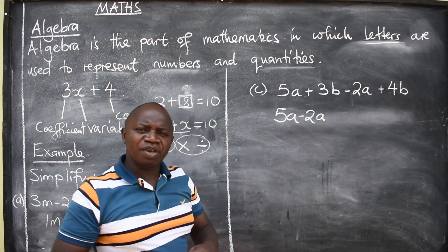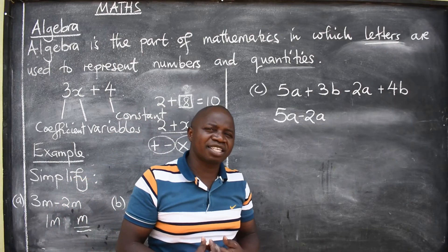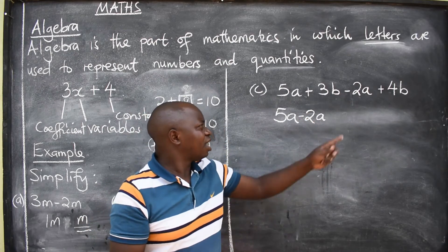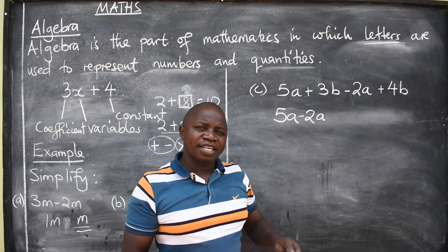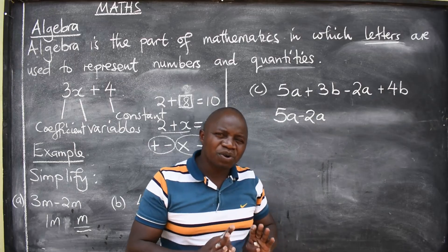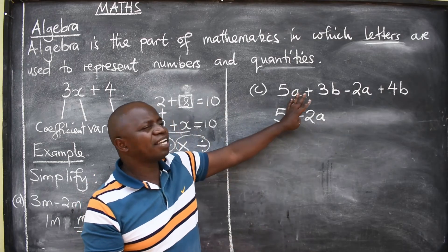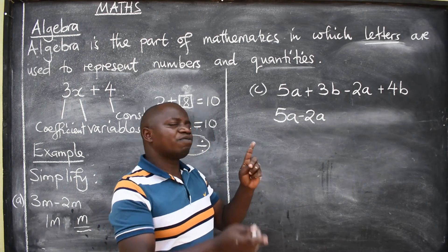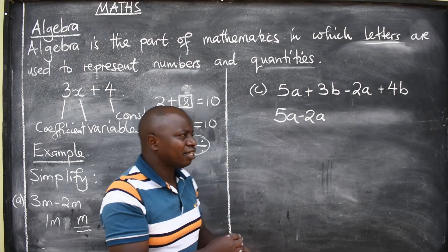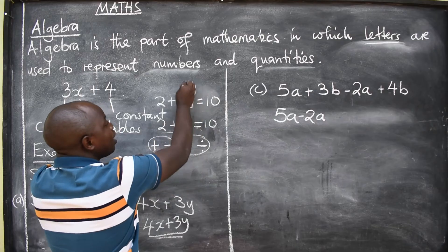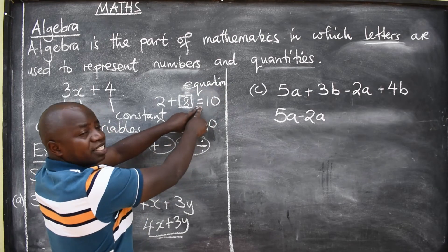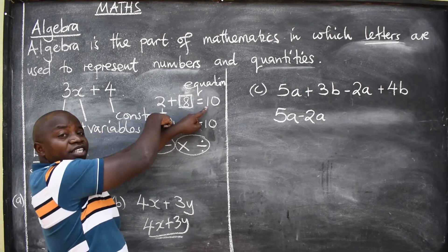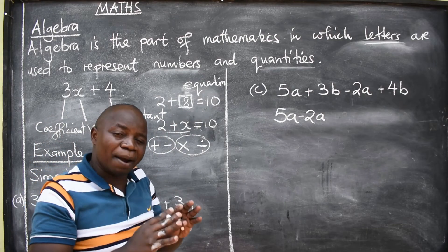There are those students with that concept of when you bring this here, it changes, the sign will be positive. Is this where we apply that concept? No. We don't apply that concept under algebraic expressions. Please, I'm begging you. Only apply that concept of swapping the signs when you are dealing with equations only. When it has got equal sign. For example, if this is positive 10, when it crosses the equal sign, it becomes negative 10. That is where we apply. Not here.